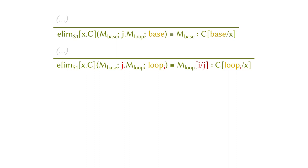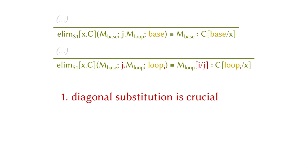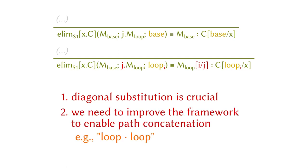Those two are the computational rules for the circle. There are two additional points I want to bring up. First, diagonal substitution is crucial — by diagonal substitution I mean the substitution of i for j you saw on screen. Earlier papers on cubical type theory did not have this, and that's why we didn't know how to do the circle in cubical type theory. But now the problem is solved. The other point is that we are actually not done yet: we need to improve the framework to even talk about path concatenation. Right now you're not even able to concatenate two loops together to form a double loop.